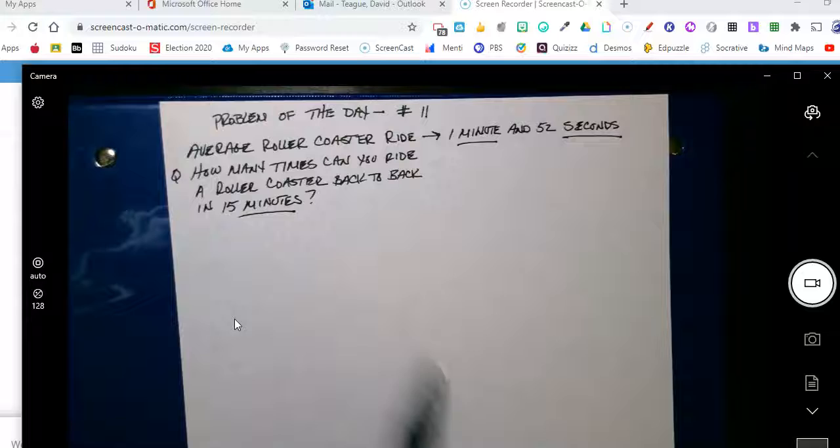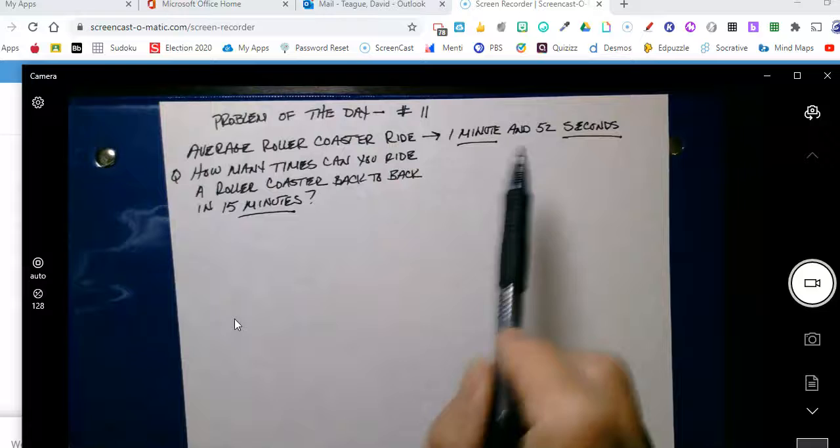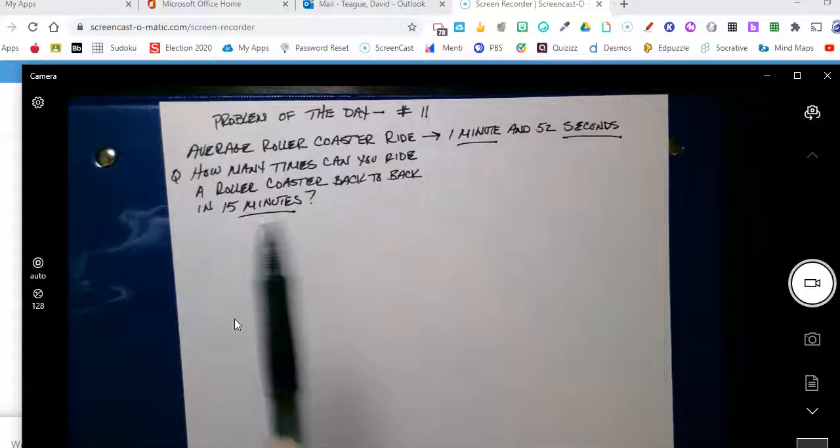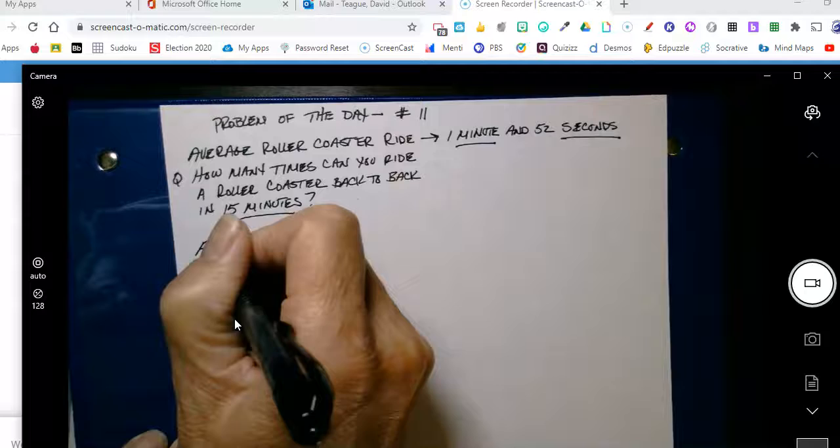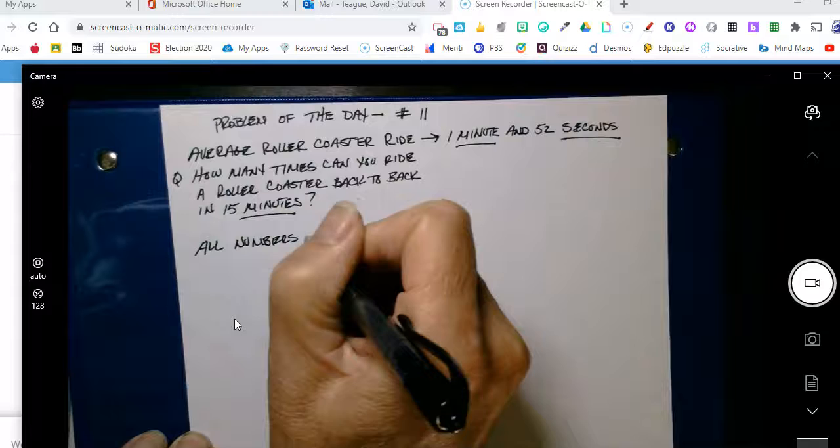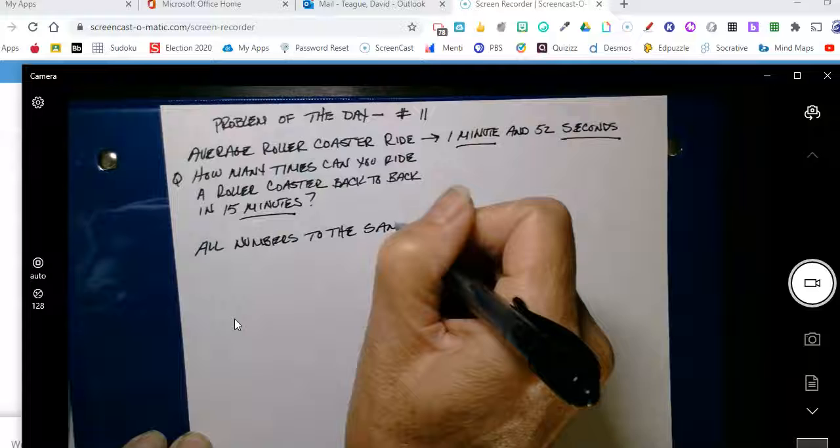So what I want you to notice is that we have different units here. So we have a total of 15 minutes here, but the one single ride is 1 minute and 52 seconds. So the first thing we want to do is we want to convert all numbers to the same units.